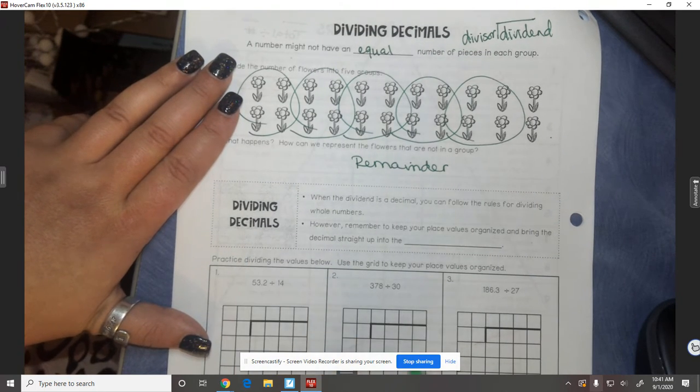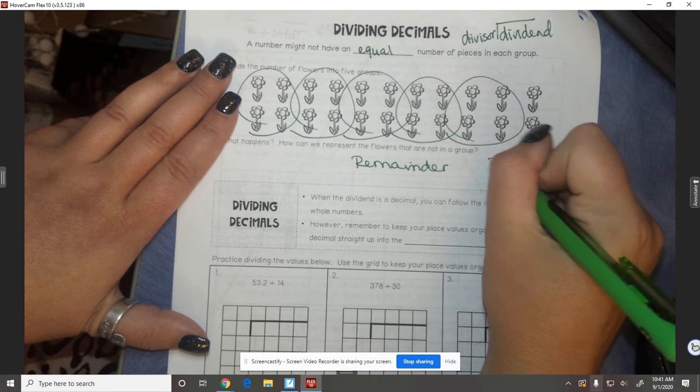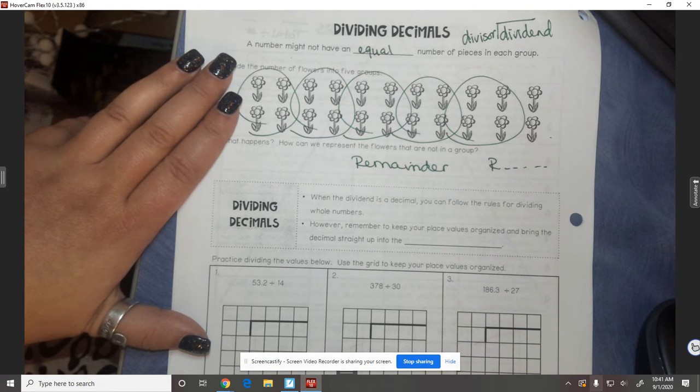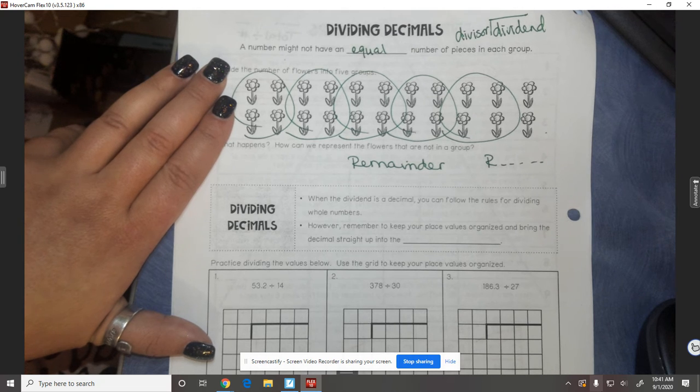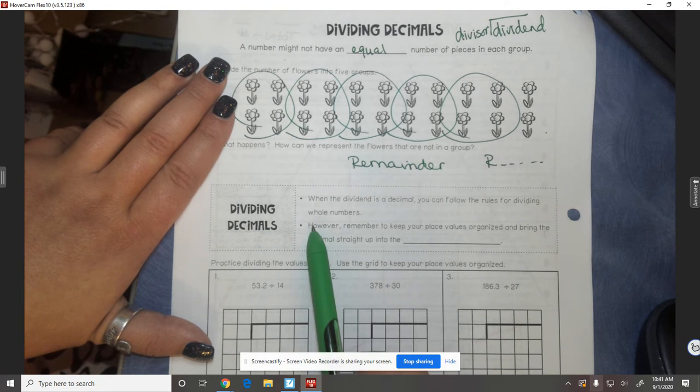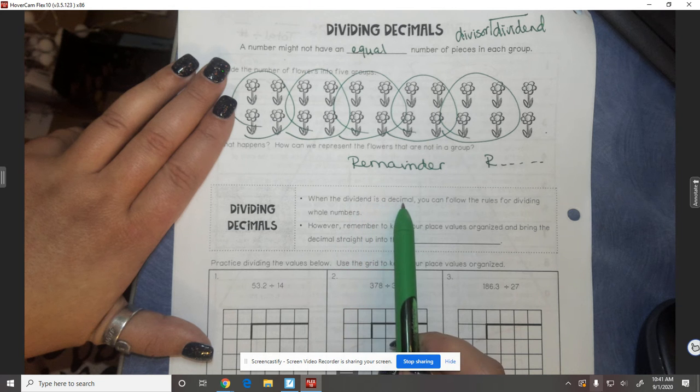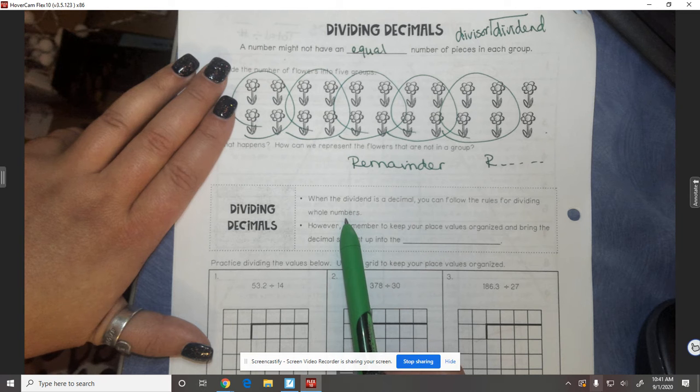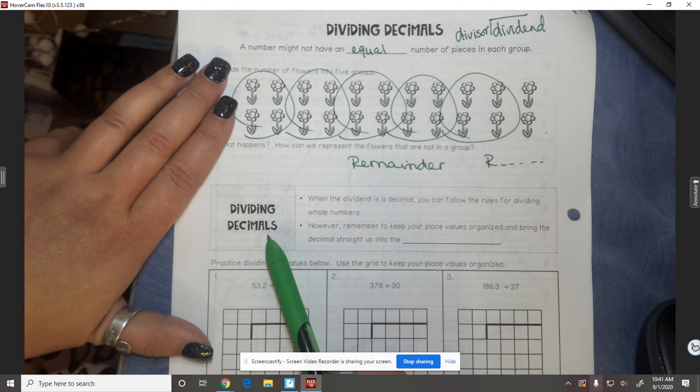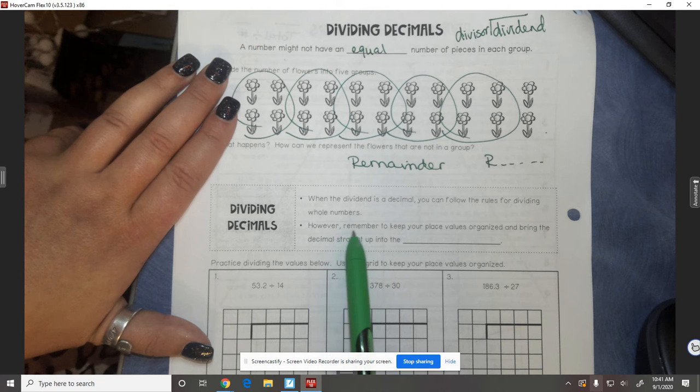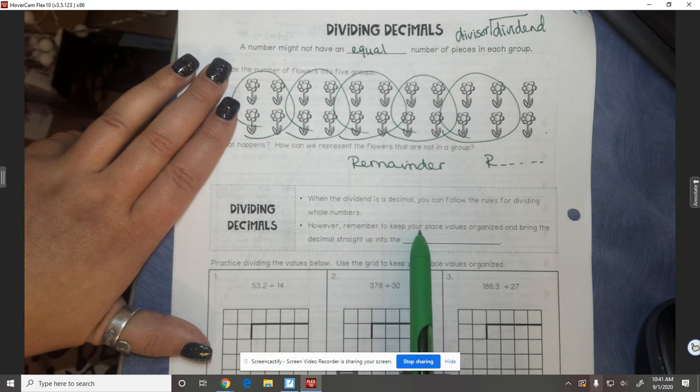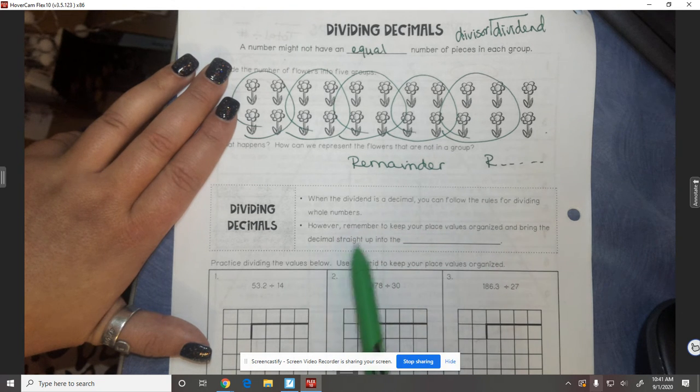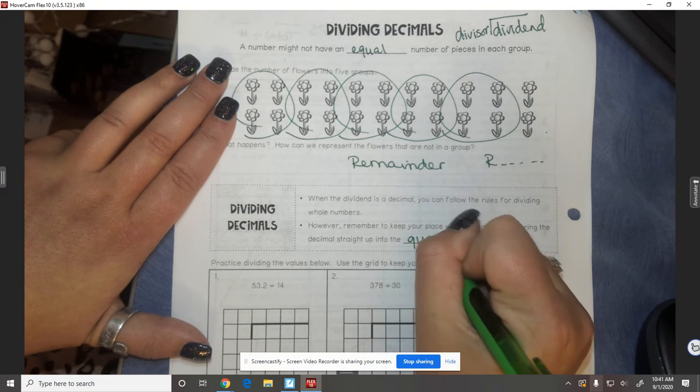So you're used to putting, if there's a remainder, you're used to putting like R whatever. We don't put the R in the number. We don't do remainders anymore. The way we do remainders is in the form of a decimal. So it gives you two little notes right here. It says when the dividend is a decimal, you can follow the rules for dividing whole numbers. So it's the same exact rules that we did yesterday, except we have a decimal. There's only one extra step. However, remember to keep your place value organized and to bring the decimal straight up into the quotient.